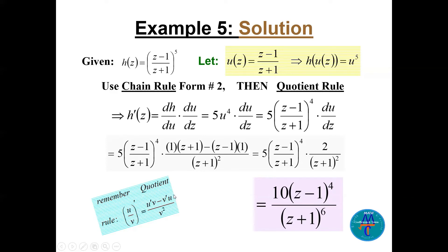The derivative of (z−1) is 1, so the numerator is 1·(z+1) − 1·(z−1) = 2. The denominator is (z+1)². Multiplying by 5u^4 and substituting u = (z−1)/(z+1), we get h prime(z) = 10(z−1)^4 / (z+1)^6.